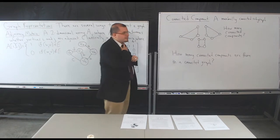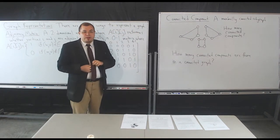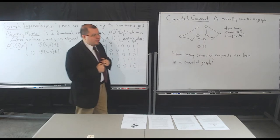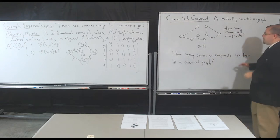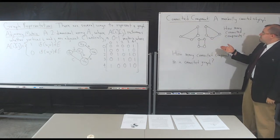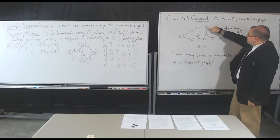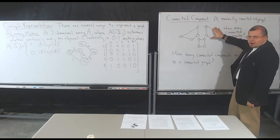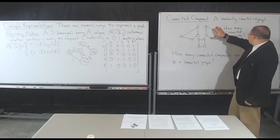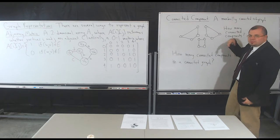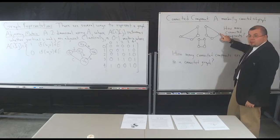A connected component of a graph is a maximally connected subgraph. What does maximally connected mean? Here's a graph. If I take this edge with these two endpoints, that's a subgraph of this graph. A maximally connected subgraph means that first, that one edge was connected. However, there's another edge here that's incident on this vertex, so that means that edge should be a part of my subgraph.